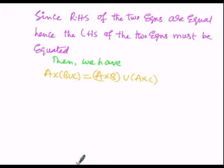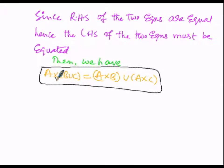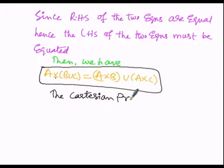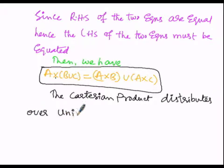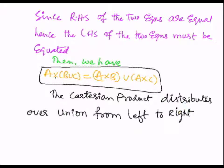From this it is understood that the Cartesian product distributes over union. The Cartesian product distributes over union from LHS to RHS, meaning A cross (B union C) equals A cross B union A cross C.